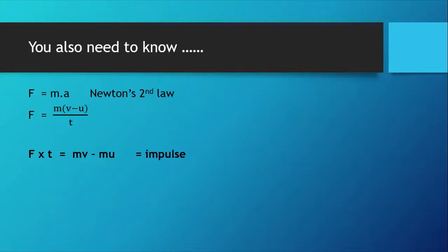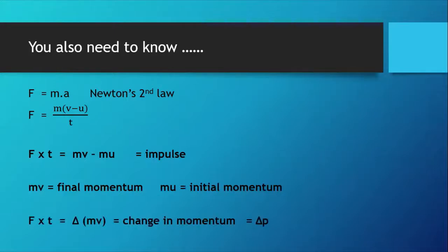F times t equals mv minus mu and this is also known as impulse. A couple of things to bear in mind: mv is the final momentum with v as the final velocity, while mu is the initial momentum with u as the initial velocity.